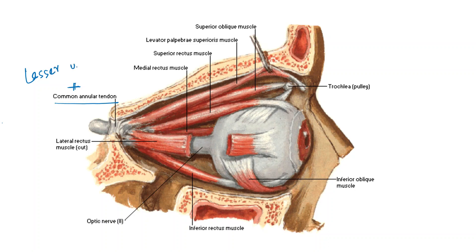The under surface of the lesser wing of the sphenoid gives the attachment of the levator palpebrae superioris muscle. The origin of this muscle begins as a tendon. From its point of origin, the muscle is directed straight forward. As it runs forward, the muscle becomes more broad and fleshy, reaching the uppermost part. When we trace the muscle anteriorly, it ends by forming an aponeurosis.